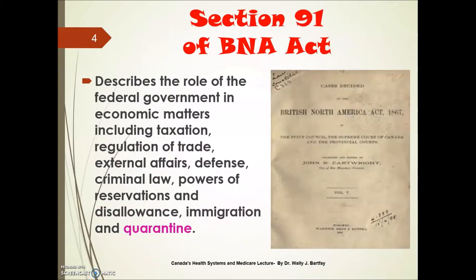There are two sections that are critical in this BNA Act. Section 91 describes the role of the federal government in economic matters — things like taxation, regulation of trade, external affairs, defense, criminal law, and powers of reservation and disallowance, also immigration and quarantine. So quarantine falls under the BNA Act in section 91.